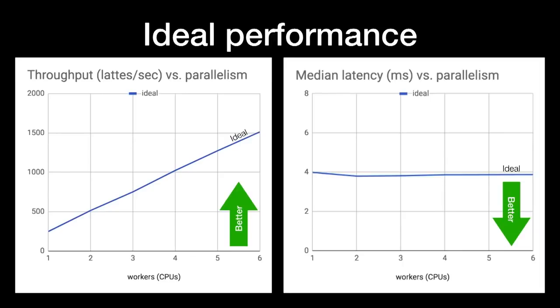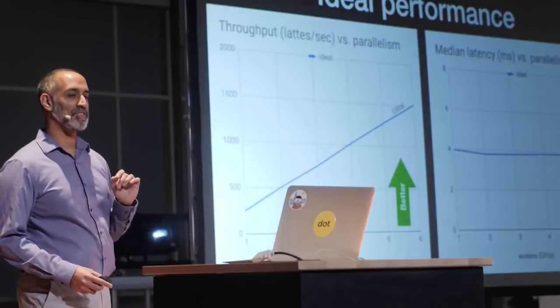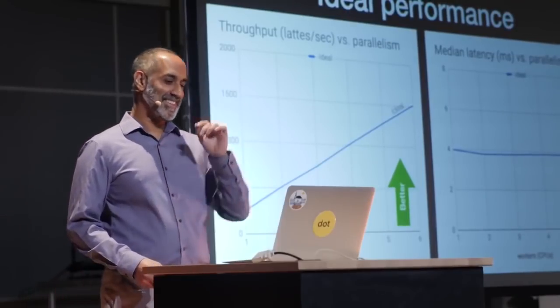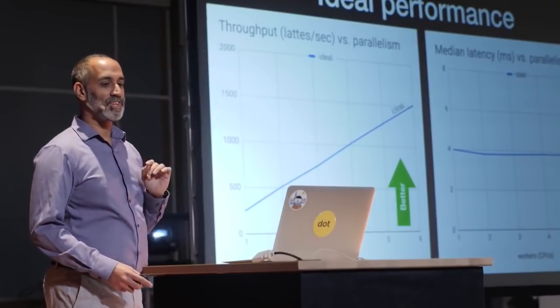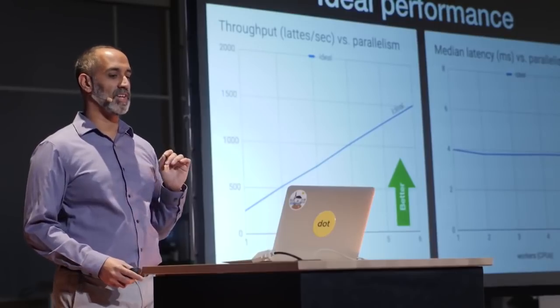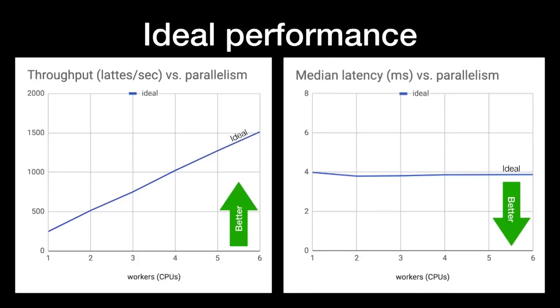Our throughput — or brew-put — is 250 lattes per second. Throughput scales linearly with more CPUs, so with six CPUs we get 1,500 lattes per second. On the throughput chart, higher values are better. The right-hand chart shows the median time required to make a latte. The latency stays flat at four milliseconds — on this chart, lower values are better. We'll return to charts like these throughout the talk to compare our implementations.